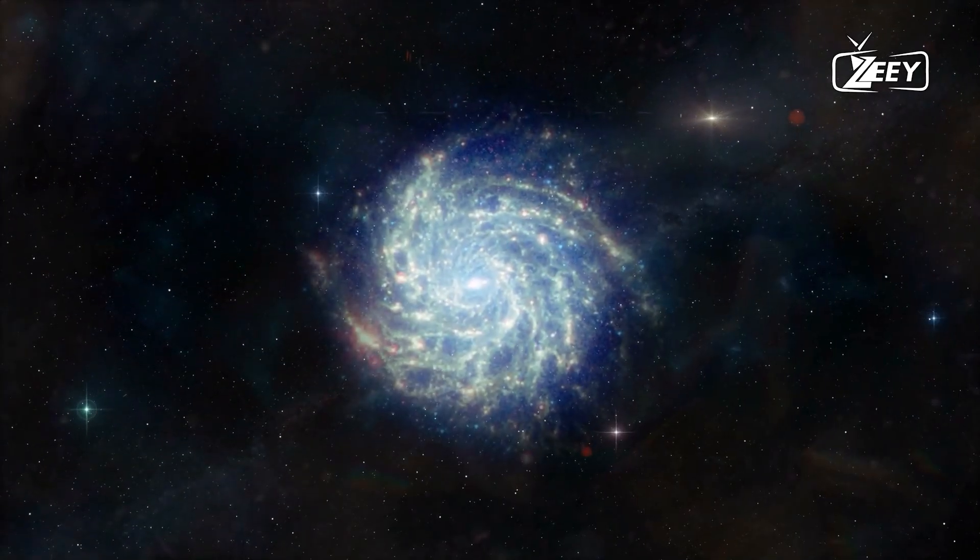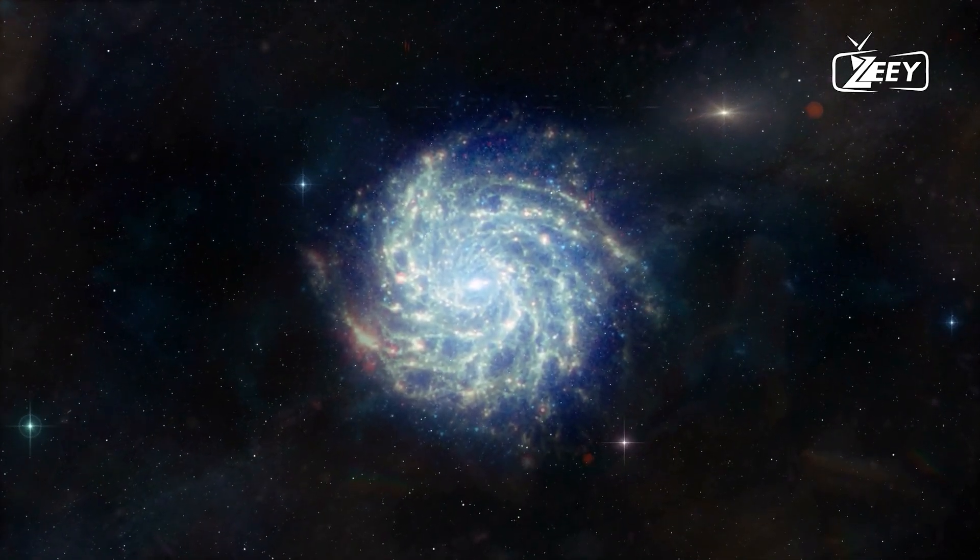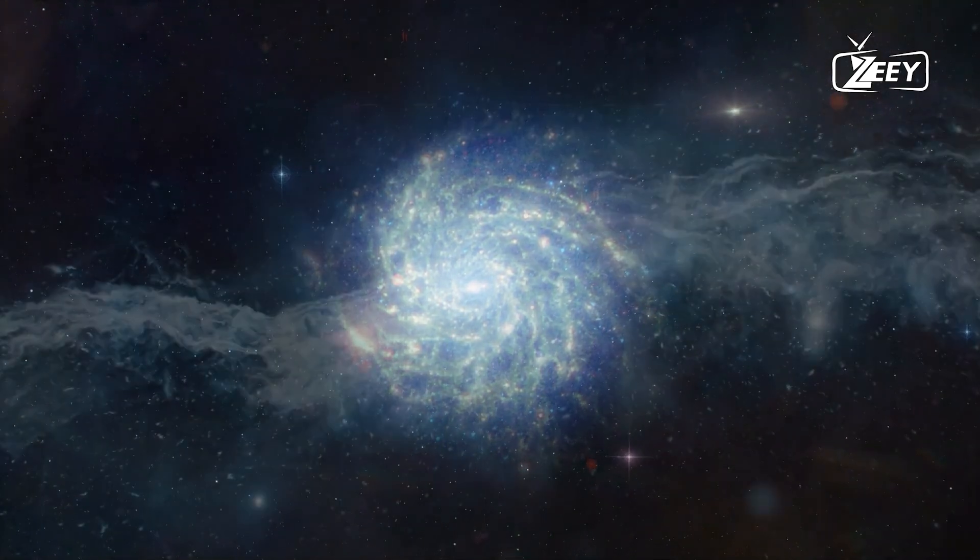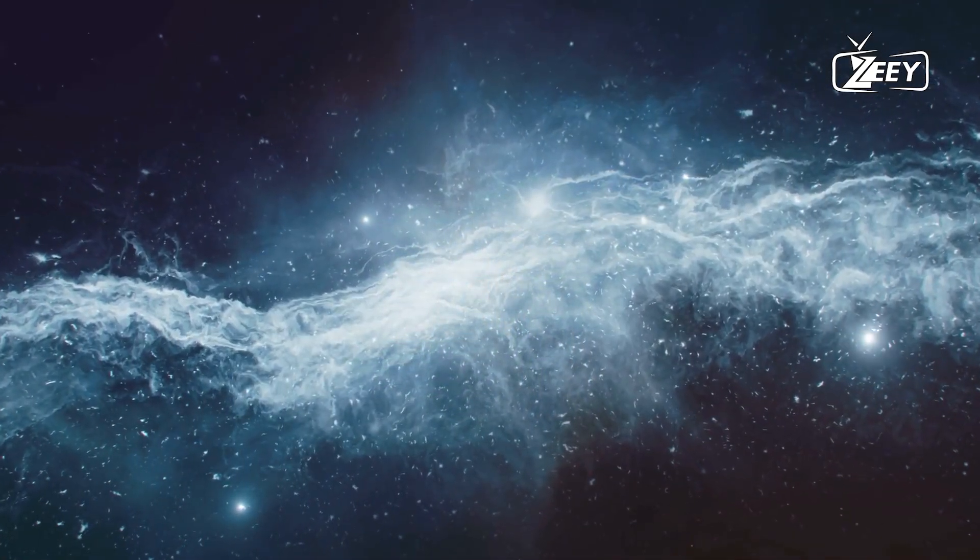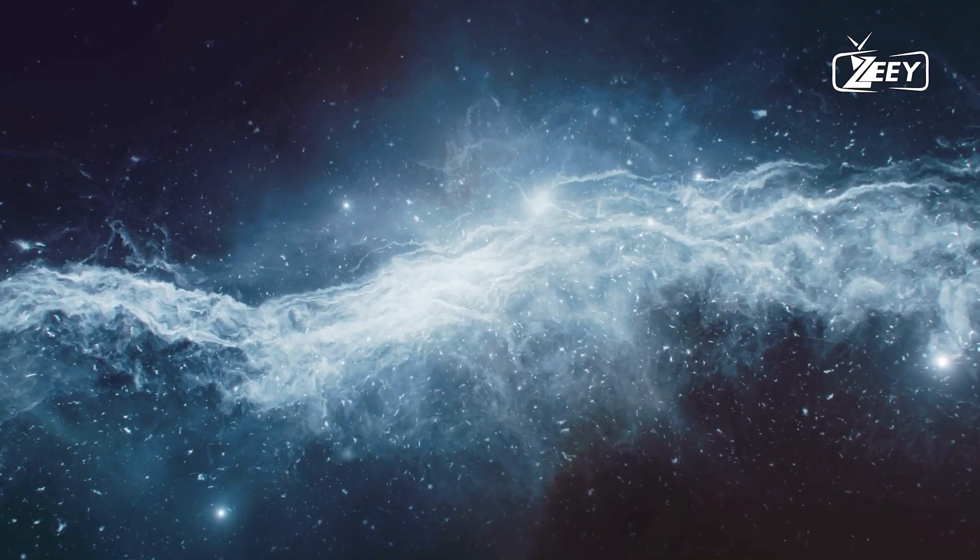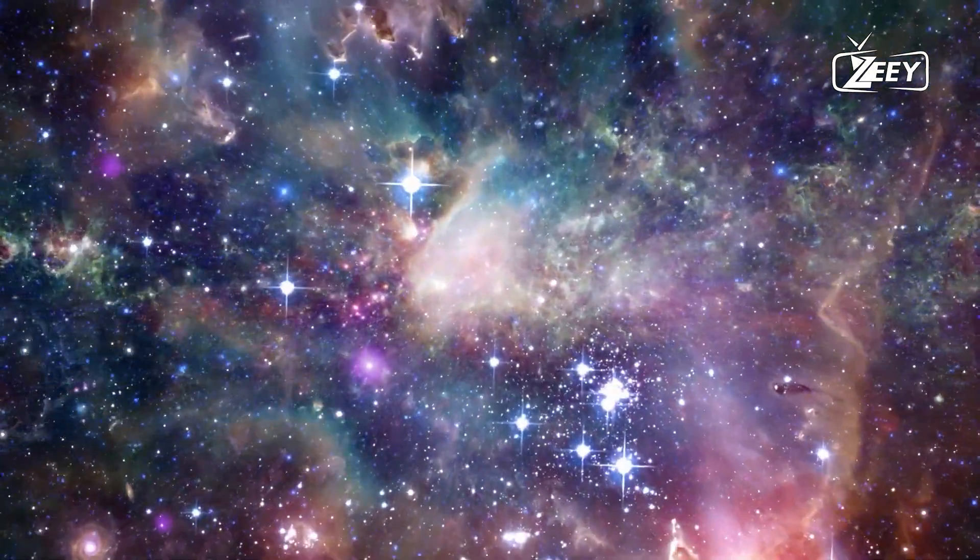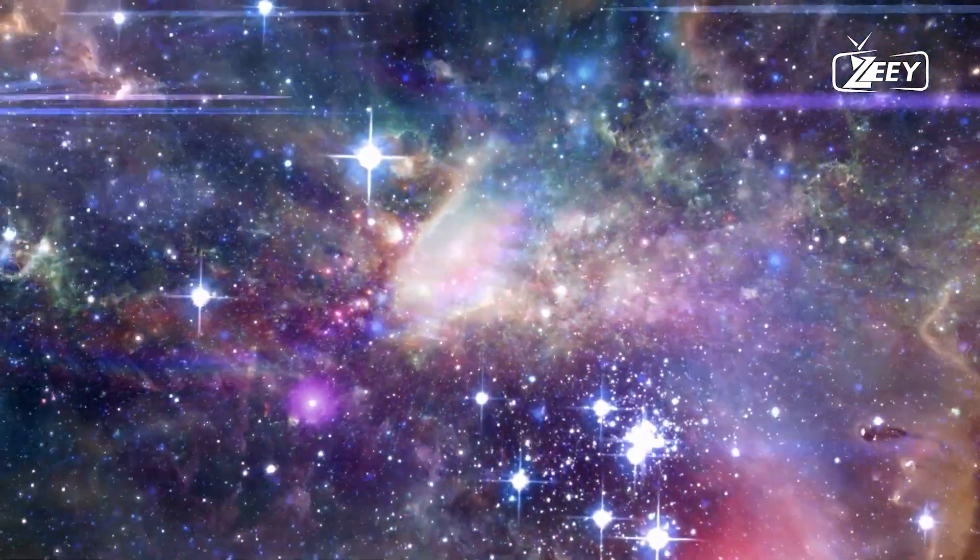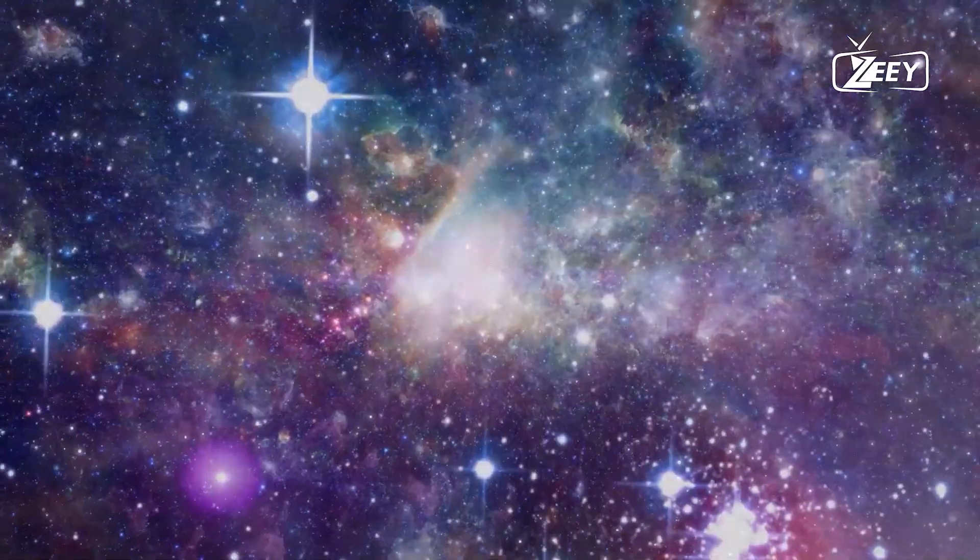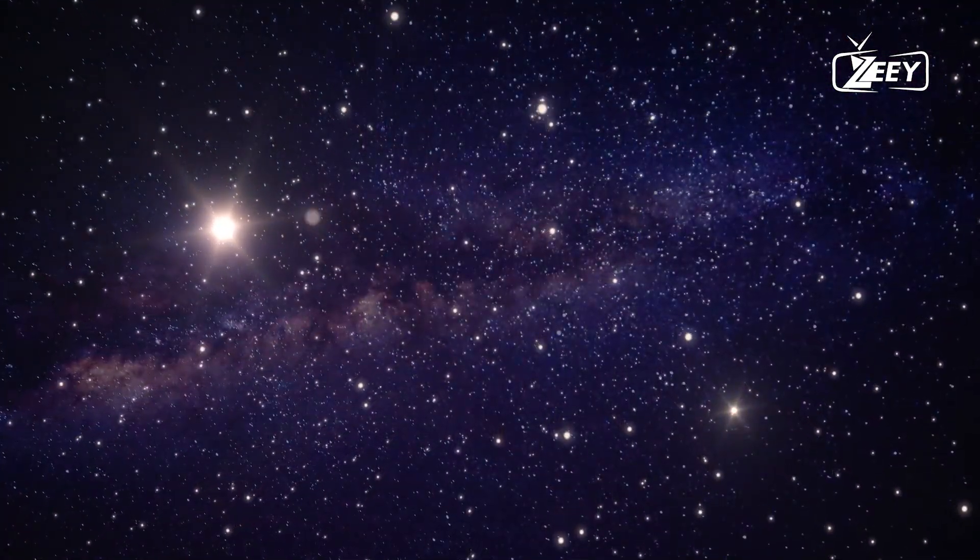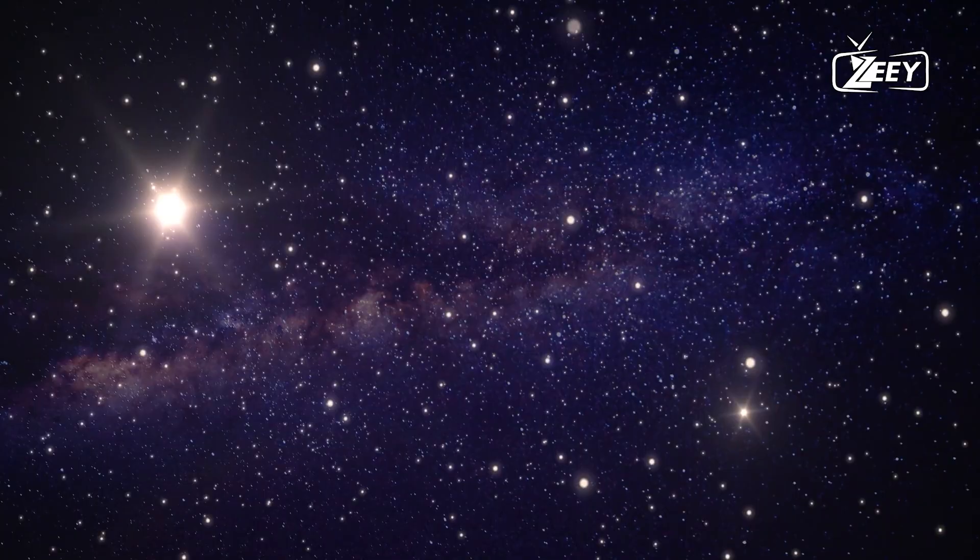A supernova is the result of a giant star, larger than our sun, reaching the end of its existence. It is one of the most catastrophic events in the cosmos - a tremendous explosion on a scale nearly unimaginable for humans. Occasionally, they are so strong that they are visible to the unaided eye from Earth.